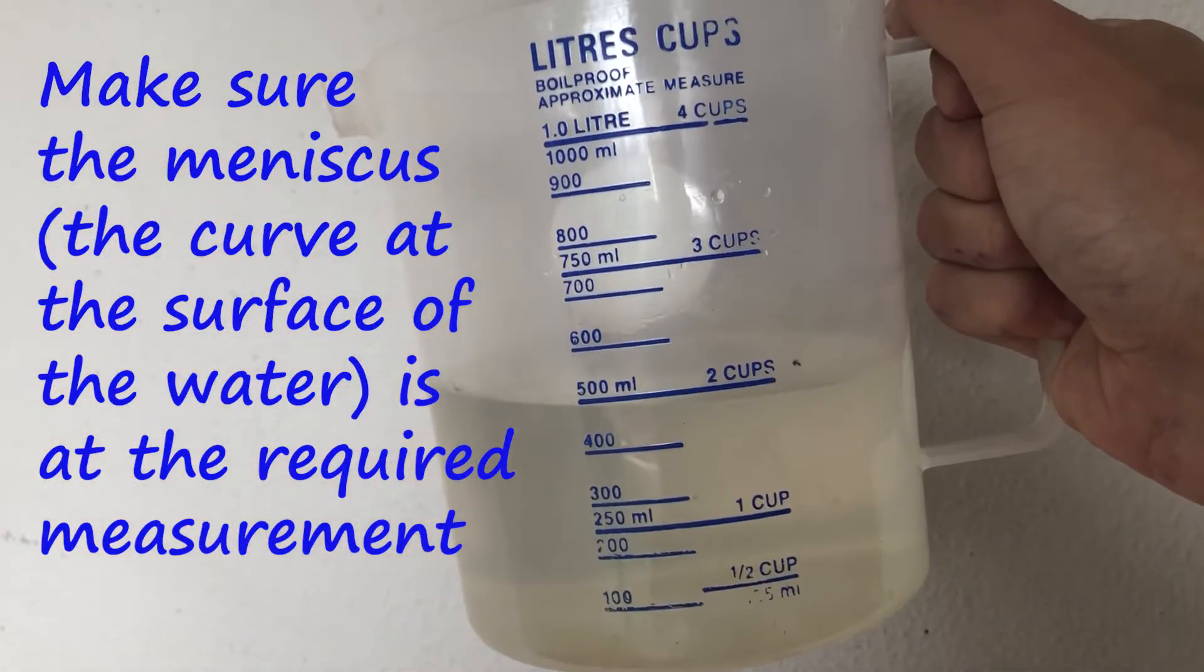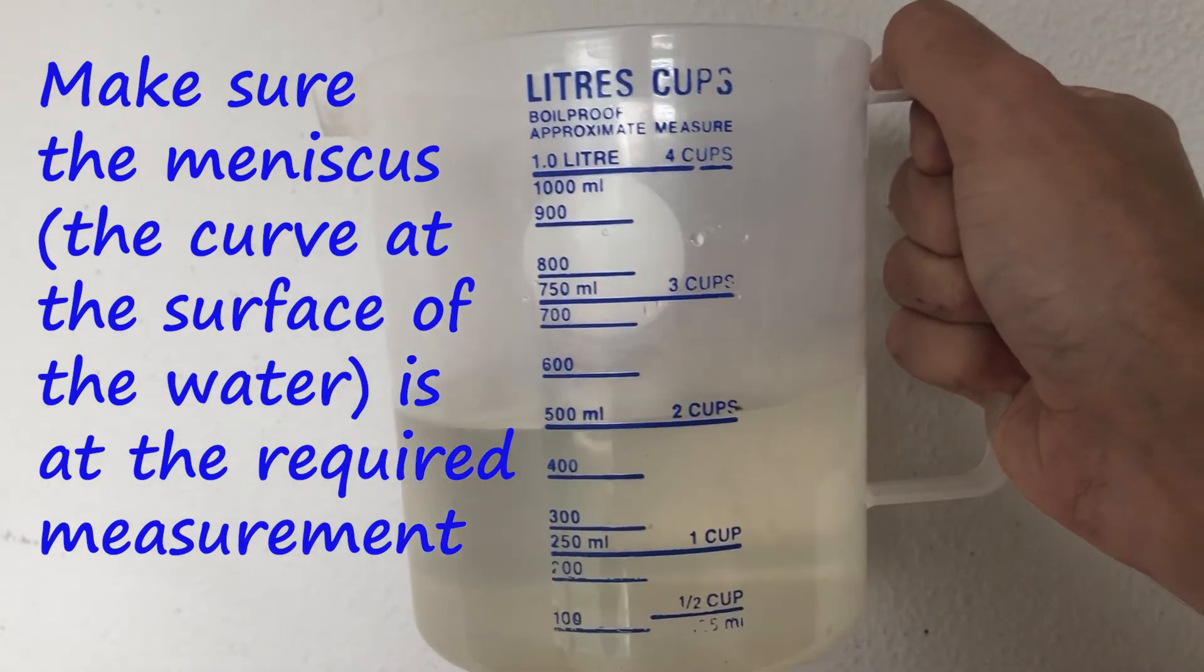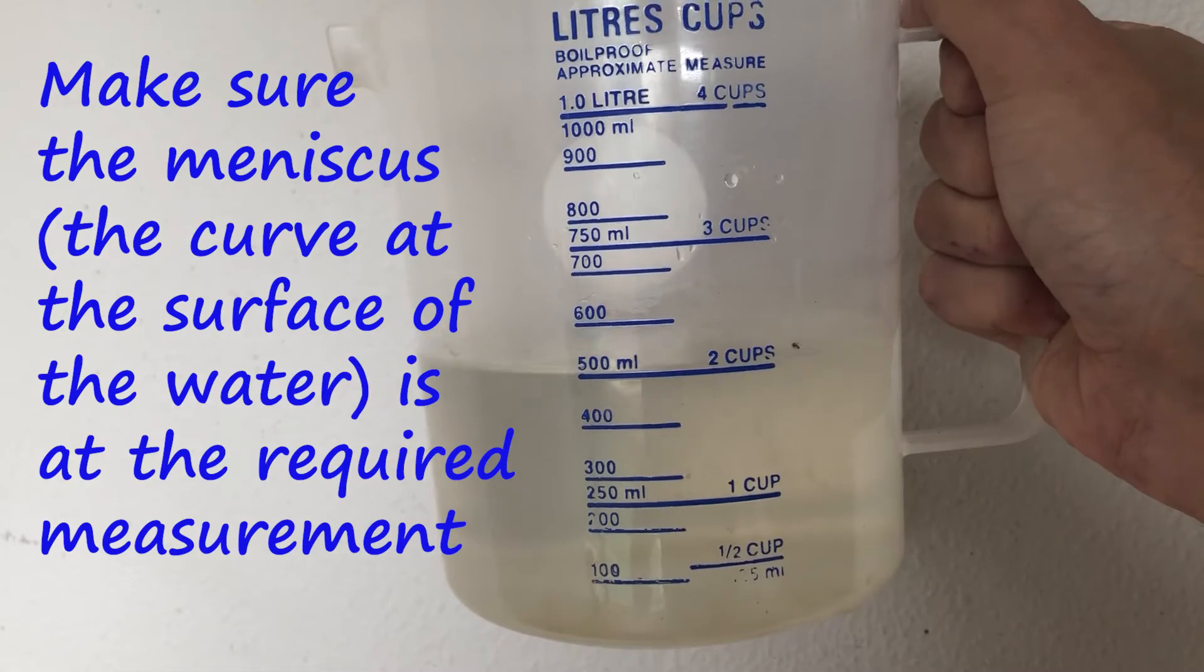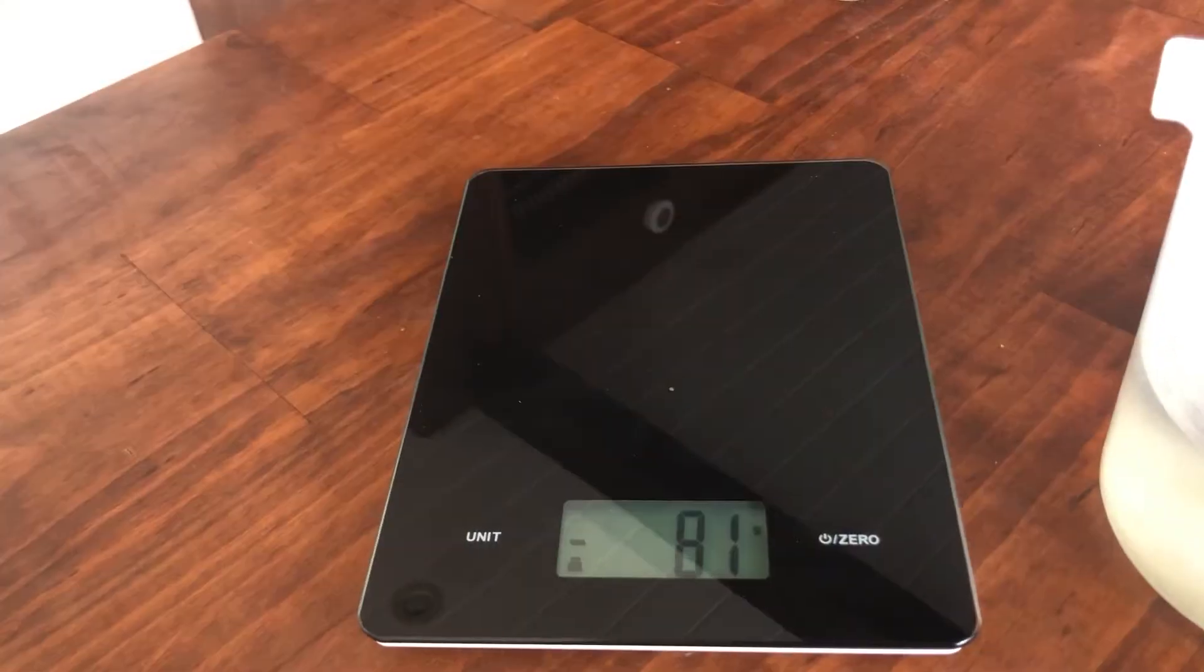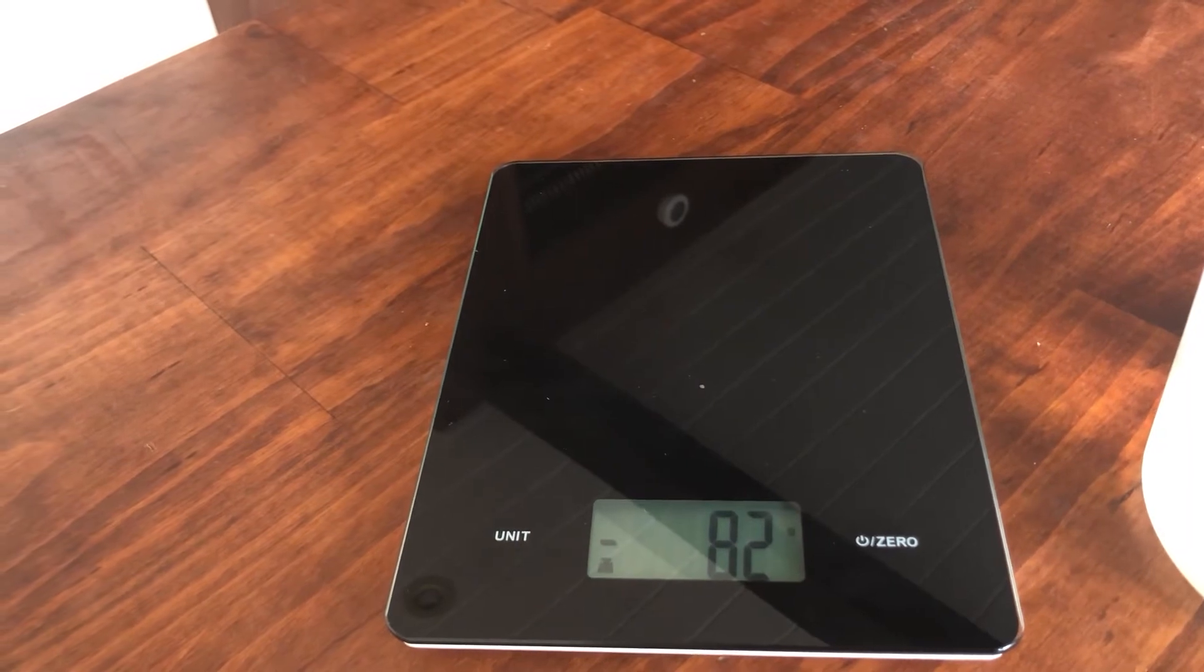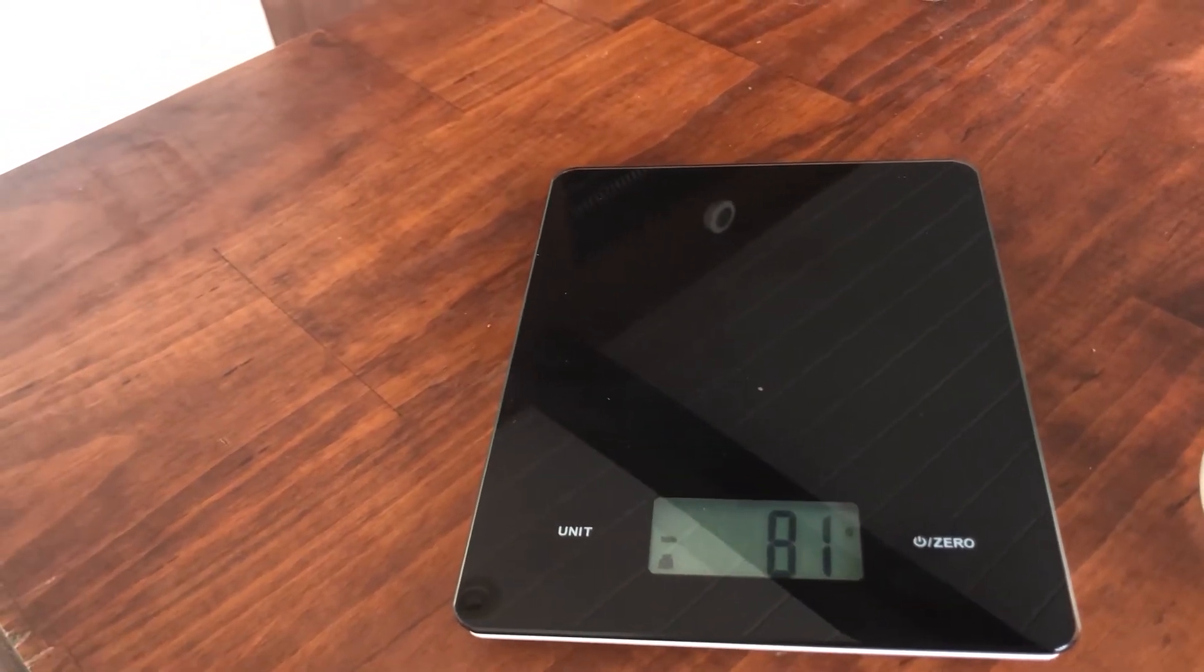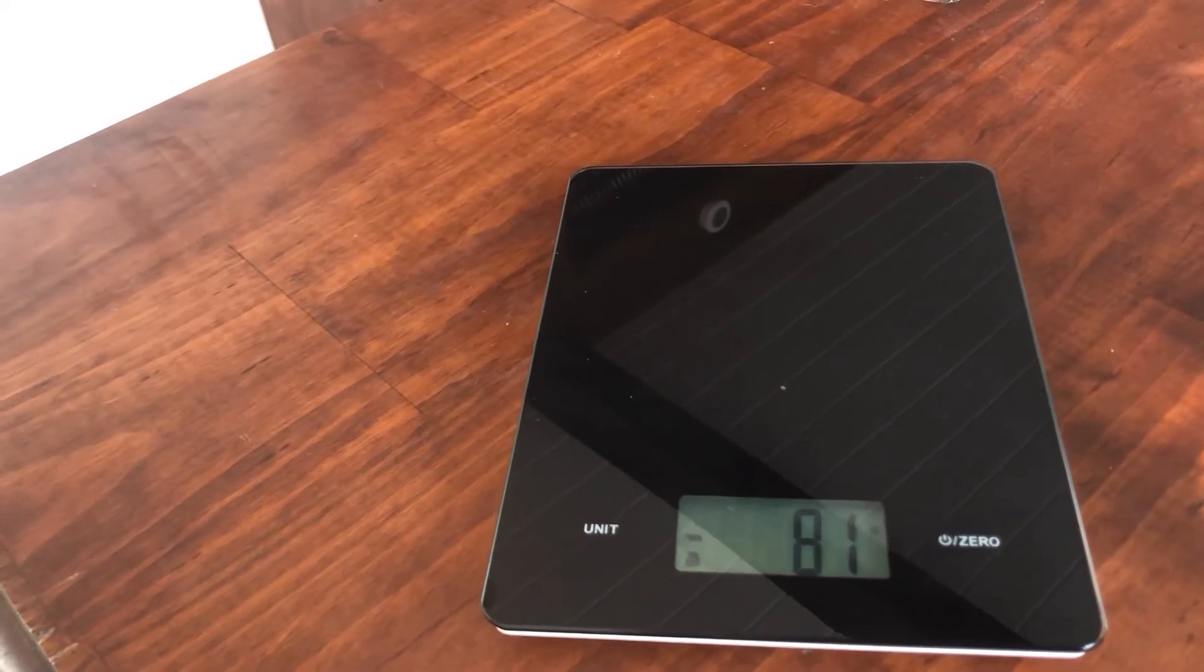Okay so it's a bit hard to see on the camera there but what I've done is I've measured out 500 mils of water. Now our scales are set to negative 81, negative 82 because there's a little bit of a breeze at the moment so that's why it's just changing slightly, but that's from when we set it earlier.